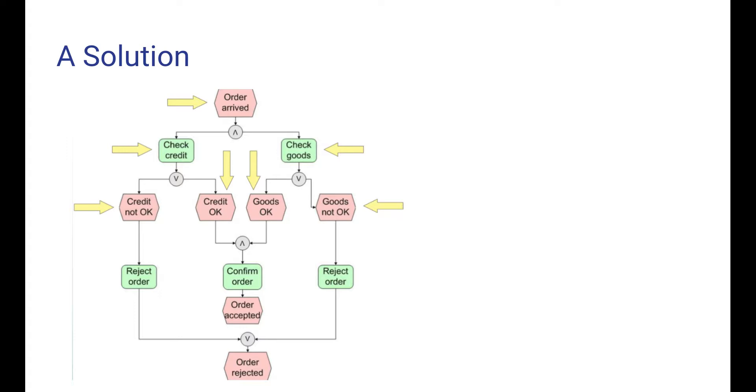Here is a solution. Note first that any EPC diagram must start and end with an event. Here the start event is order arrived. After this event comes an AND split and we move to two sub processes that are carried out in parallel.